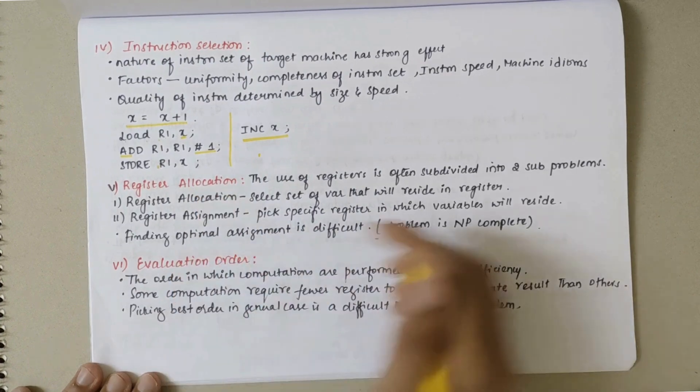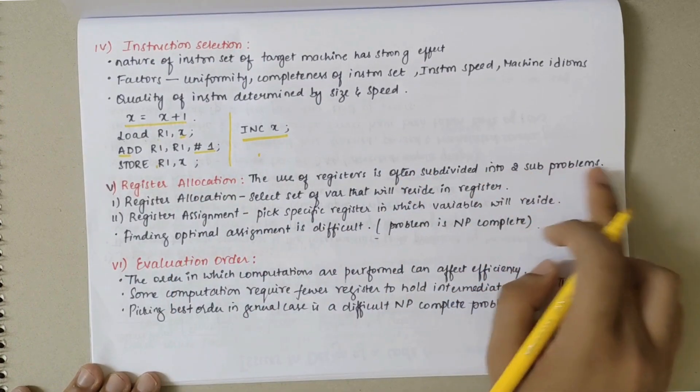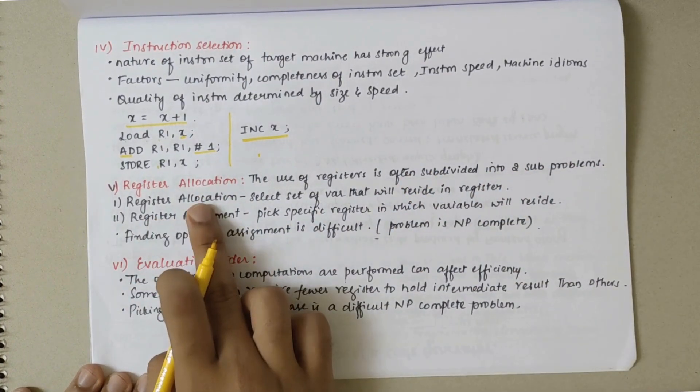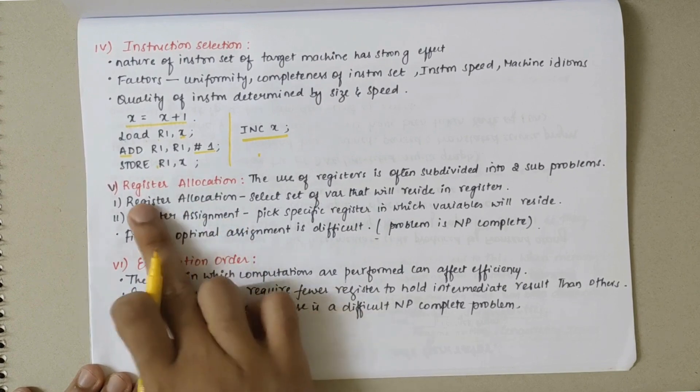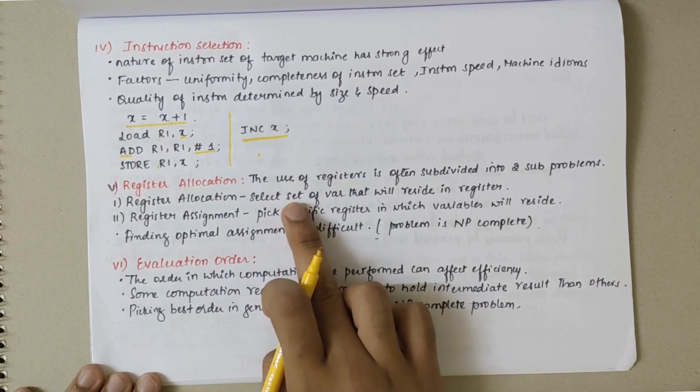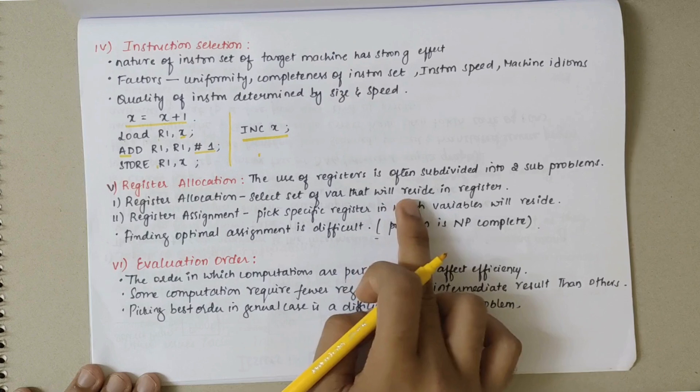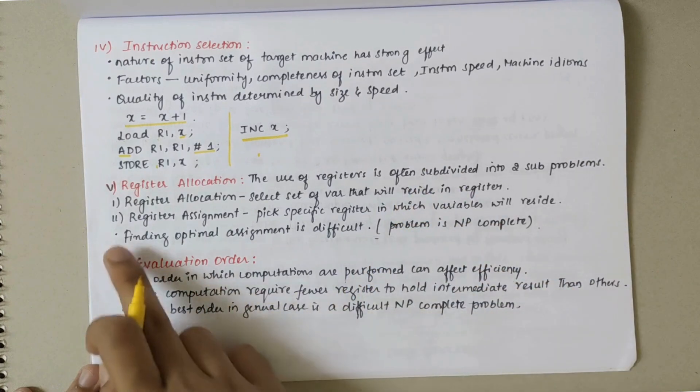Then we have register allocation. The use of register is often divided into two sub-problems. The first one is to allocate - register allocation - where we select the set of variables that will reside inside the register.